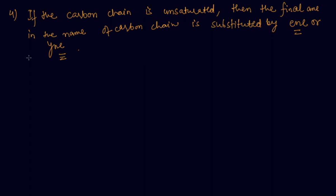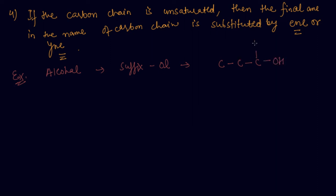Now let's discuss some examples. If the functional group is -OH, the suffix is '-ol', and an example is propanol, in which the OH group is added at carbon 1 or 2. So propanol = propane minus 'e' plus 'ol'.